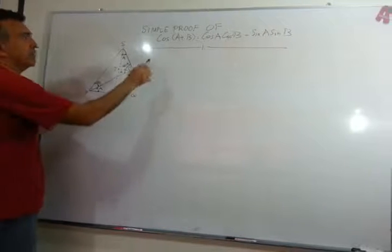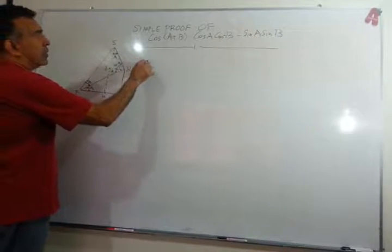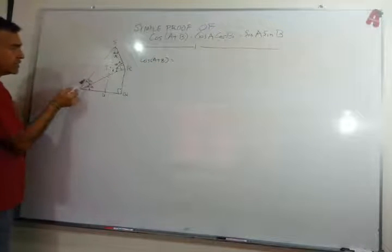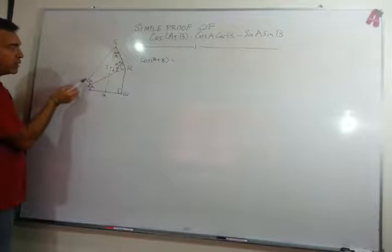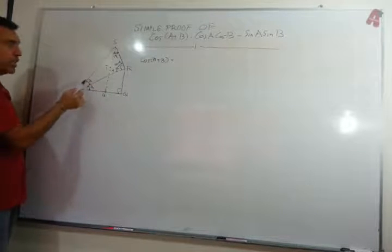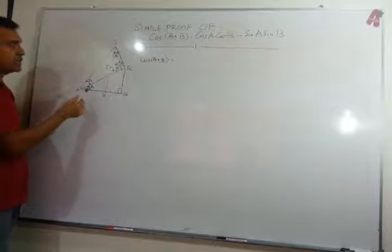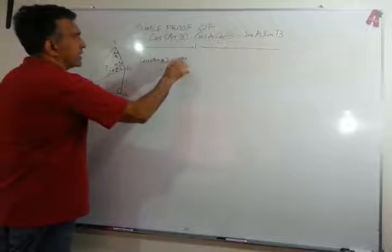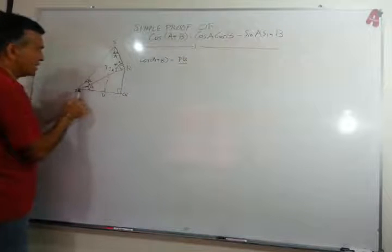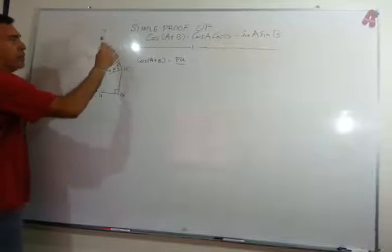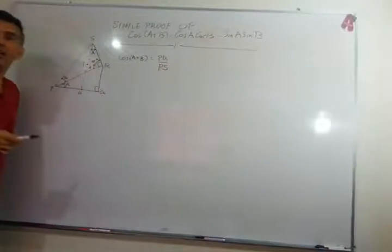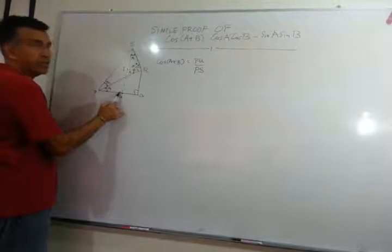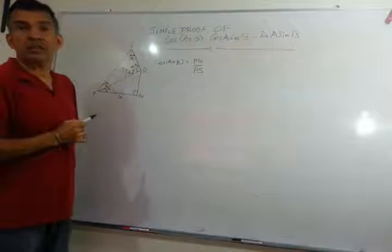Good. So now let's write cos(A + B). That's this angle here that we're talking about, which is angle SPU. Angle SPU is A + B, so cos(A + B) will be adjacent over your hypotenuse. Is that good? So cos(A + B) will be PU divided by my hypotenuse, which is PS.